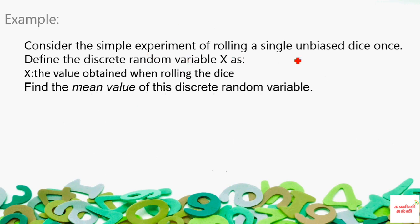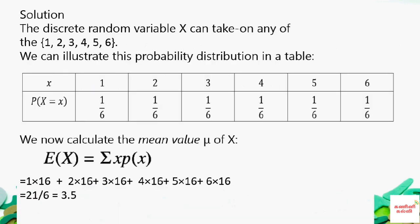Consider a simple experiment of rolling a single unbiased die. Define the discrete random variable x as the value obtained when rolling the die. The possible values are 1, 2, 3, 4, 5, 6. Find the mean value of this discrete random variable. This is a probability distribution.